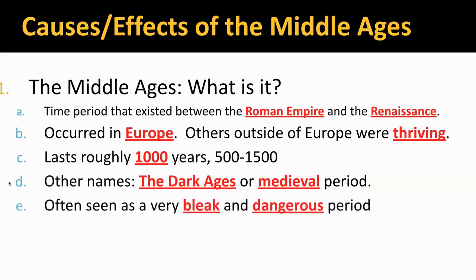The Middle Ages is often seen as a very bleak and dangerous time. Starting with the fall of Rome, those Germanic tribes came in — they couldn't read or write, they were often lawless. It was a very different way of life for Europe once Roman continuity was gone. The Middle Ages is not seen as a beacon of humanity or a wonderful time in history.